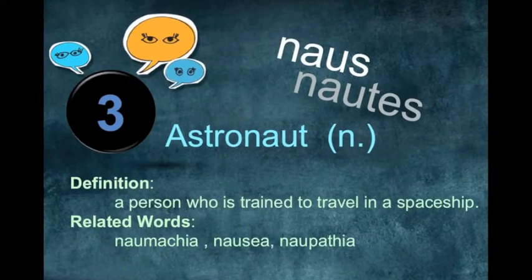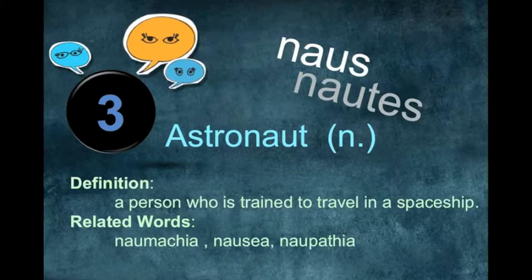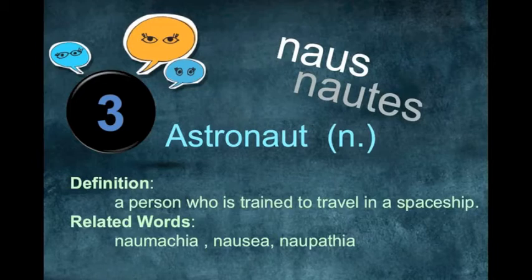The third root is naut, meaning ship and sailor. Related words include astronaut, naumachia, and nausia. Astronaut means space membership. Naumachia is the military practice of sea war. The other word, nausia, is the feeling of being sick at sea.